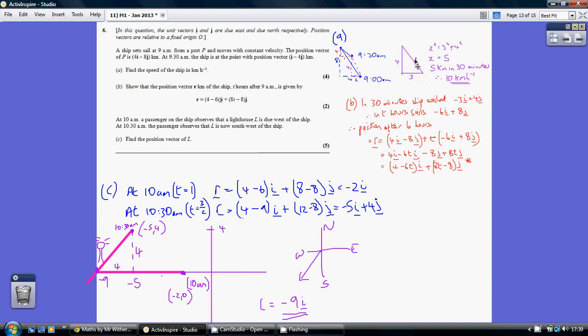So it's a classic 3, 4, 5 triangle. By Pythagoras, the distance travelled is 5 kilometers in the 30 minutes. So therefore the speed in kilometers per hour, just double it, is 10 kilometers per hour.